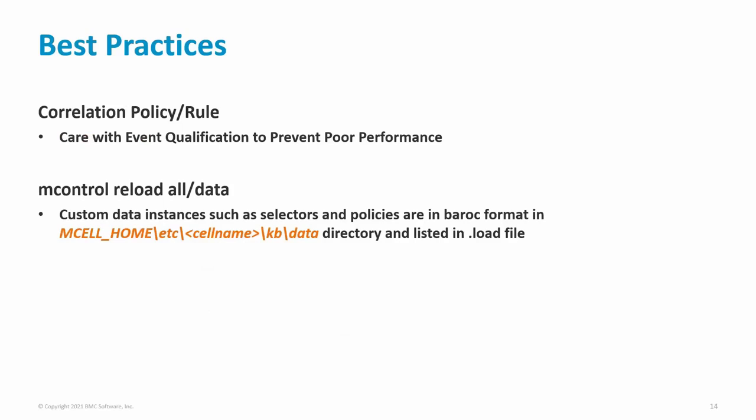For correlation policies and rules where the qualification is based on event class, initially with few events in the cell there is no noticeable performance impact. But over time, as the number of events increases, there will be a significant performance impact. Performance will be much better if the number of events searched is minimal and the event qualification is as specific as possible. The MControl ReloadAll or MControl ReloadData commands will remove all data instances and reload from the cell KB data directory. Data instances created via MSend, Administrator Console, or a rule with the 'new data' primitive are not automatically stored in the cell KB data directory. To prevent loss of custom data instances, they should be present in Baroque format in the cell KB data directory in a custom file, with an entry for that file included in the .load file.